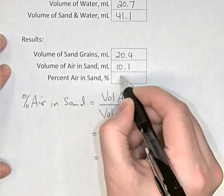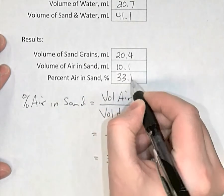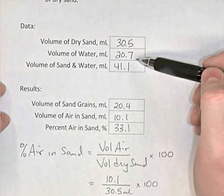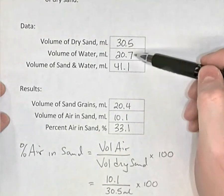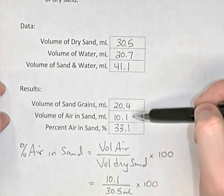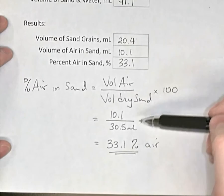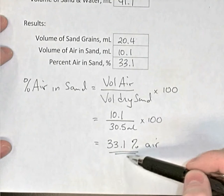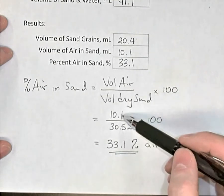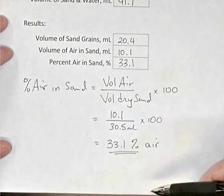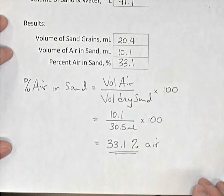Now notice in terms of significant digits, when we subtract numbers, we base our answers on the number of decimal places. So all of the data points had one decimal. When I subtracted these numbers down below, we kept one decimal place. Then in terms of the percent air, we were dividing two numbers and times it by 100. The answer there, the number of digits, is based on the number of significant digits in these two numbers. So 10.1 has three significant digits and 30.5 has three significant digits. So I kept three significant digits in the answer, 33.1% air.